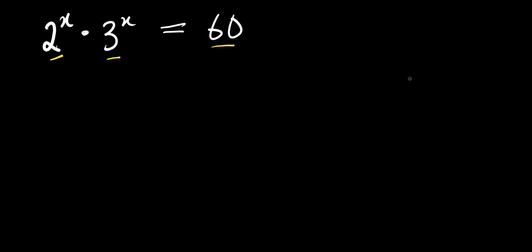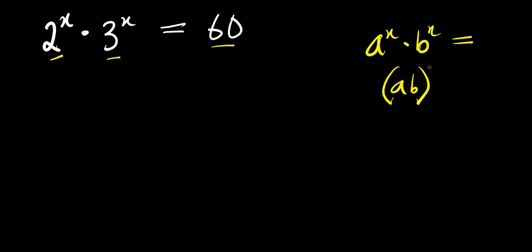Now, let's start by using this identity: if you have a to the power x times a to the power x, this equals ab raised to the power of x.